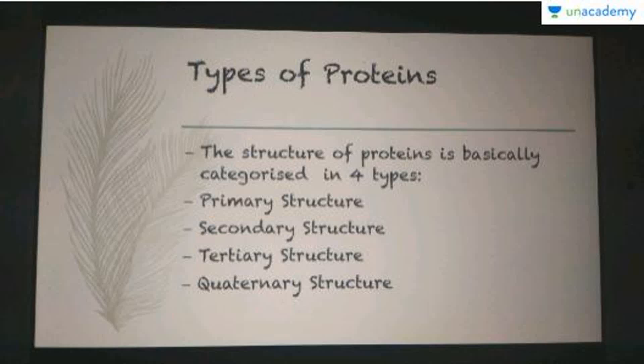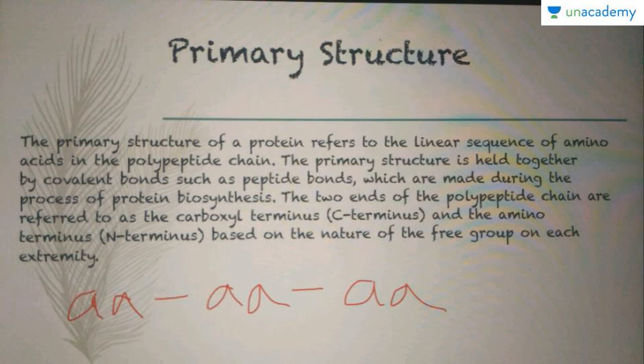For the next topic, types of proteins based on structure: the structure of proteins is basically categorized into four types — primary, secondary, tertiary, and quaternary. Let's begin with the primary structure. The primary structure of a protein refers to the linear sequence of amino acids in the polypeptide chain. The primary structure is held together by covalent bonds such as the peptide bonds, which are made during protein biosynthesis.